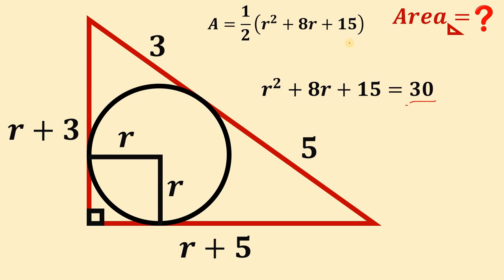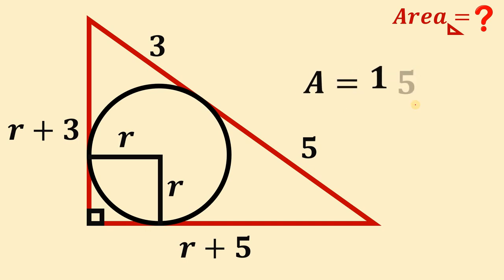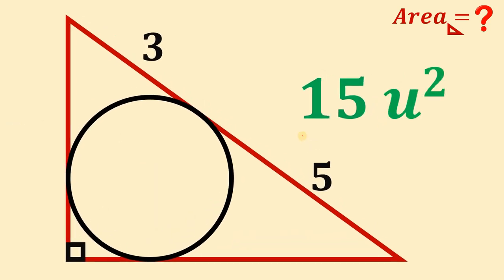Since we know the value of the expression R squared plus 8R plus 15 equals 30, we can substitute it into our area formula. The area of this right triangle equals one-half times 30, and one-half times 30 is simply equal to 15. Therefore, the area of this right triangle is 15 square units. And as always, we are done.